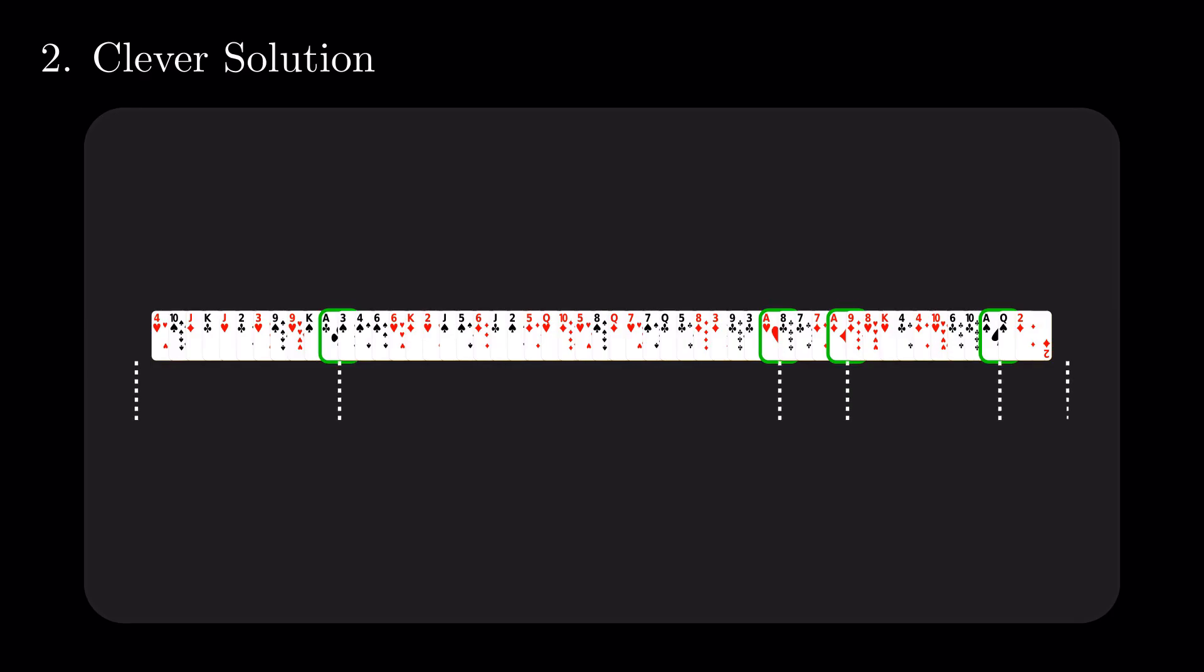The four aces and the imaginary limits of the deck partition the cards into 5 groups.